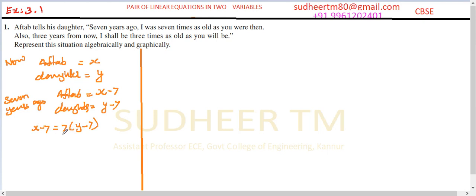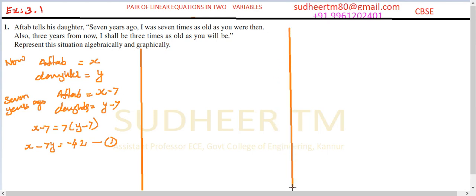So X minus 7 is equal to 7 times (Y minus 7). Expanding and moving terms to the left side, you get X minus 7Y equals minus 49 plus 7, which becomes minus 42. This is equation number one, the algebraic representation of the first case.